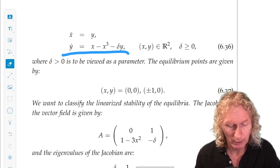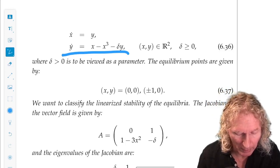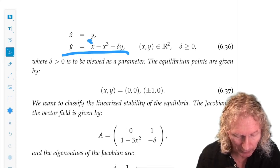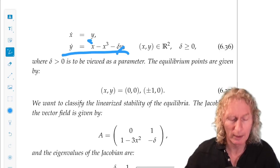There are three equilibrium points. Clearly, y equals zero has to be zero, and that's nice because this goes away. And then x minus x cubed, or x equals zero plus or minus one.